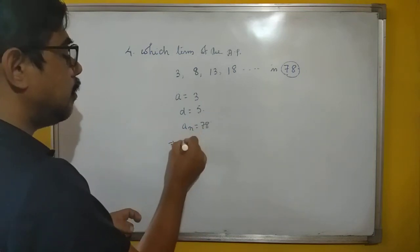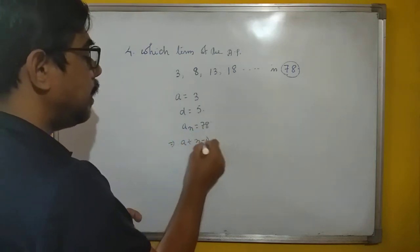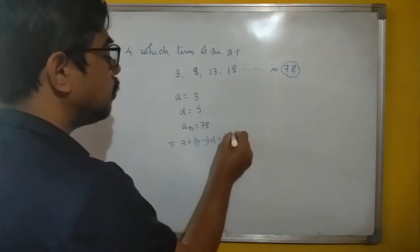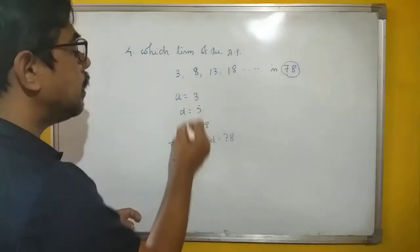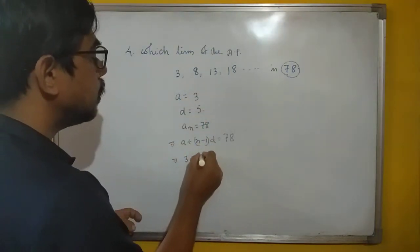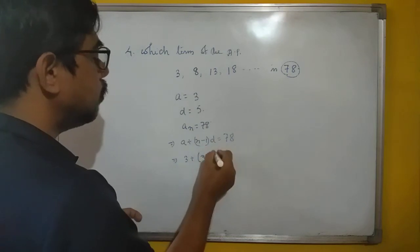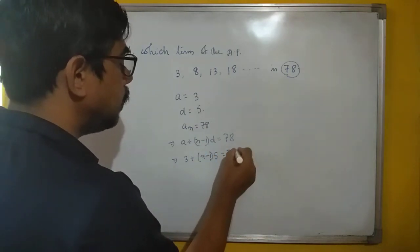So you write A_n equal to A plus N minus 1, D equal to 78. So what is it? 3 plus N minus 1 and D is 5 equal to 78.